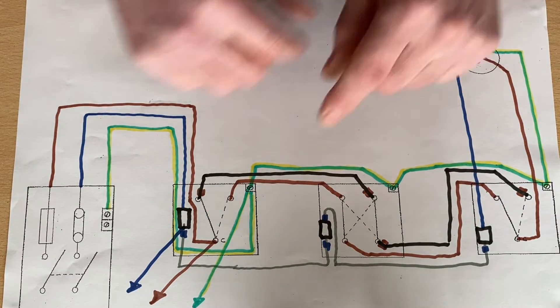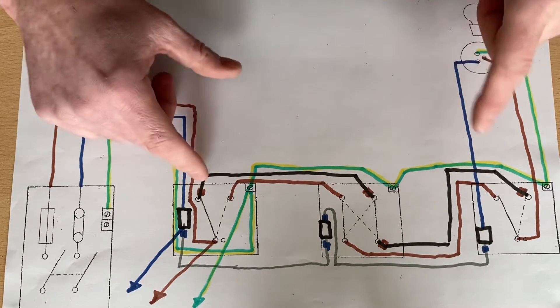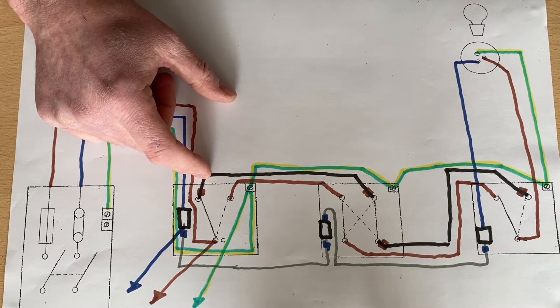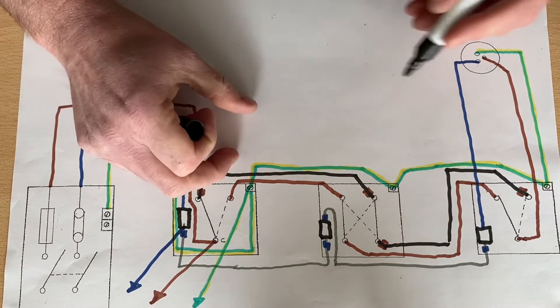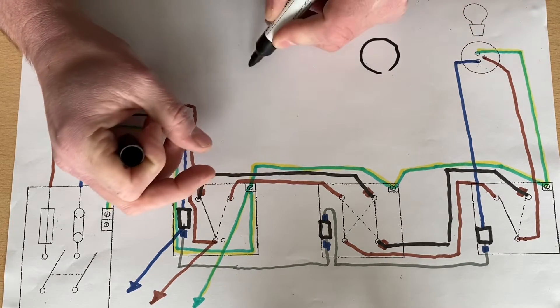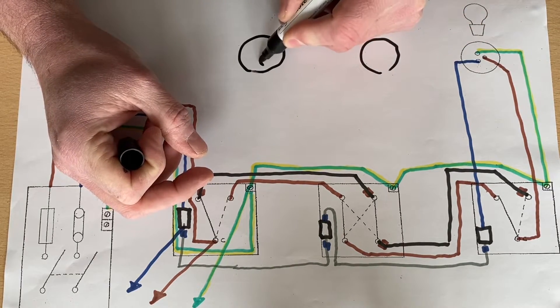So if we wanted more down lights in this system, exactly the same as we've looked at in our two plate system, we're going to just come out of here in the same area to a series of down lights, depending on how many you can have.